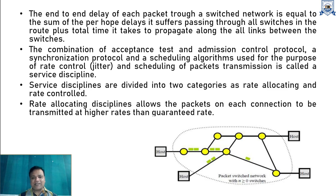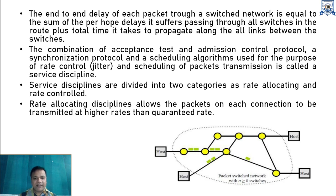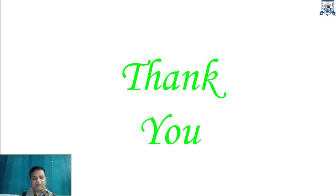The combination of acceptance test, admission control protocol, synchronization protocol, and a scheduling algorithm used for rate control, jitter control, and scheduling packet transmission is called a service discipline. Service disciplines are divided into two categories: rate allocating and rate control — rate allocating is for scheduling and rate control is for jitter. Rate-allocating discipline allows packets on each connection to be transmitted at higher rates than the guaranteed rates. In the next lecture, we will discuss various terms related to service disciplines.